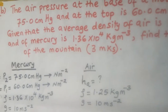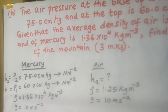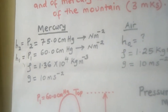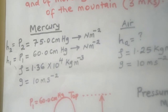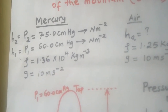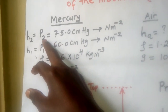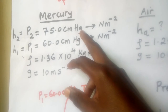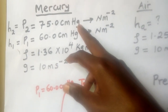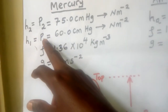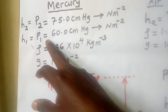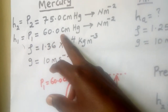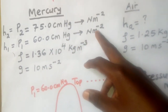We have two fluids: mercury and air. At the bottom of the mountain, where pressure is high, we have 75.0 centimeters of mercury — this is pressure 2. At the top, pressure 1 is 60.0 centimeters of mercury — it is smaller. Both pressures must be converted to newtons per meter squared because the densities are given in SI units.